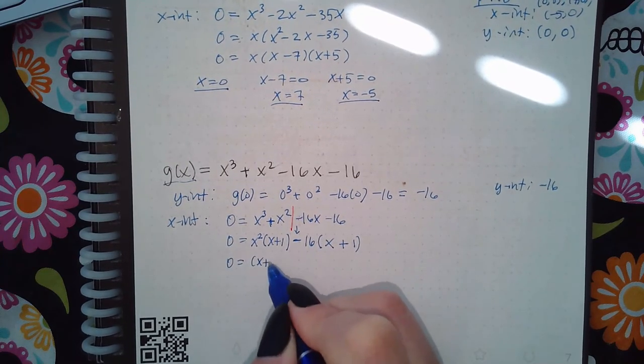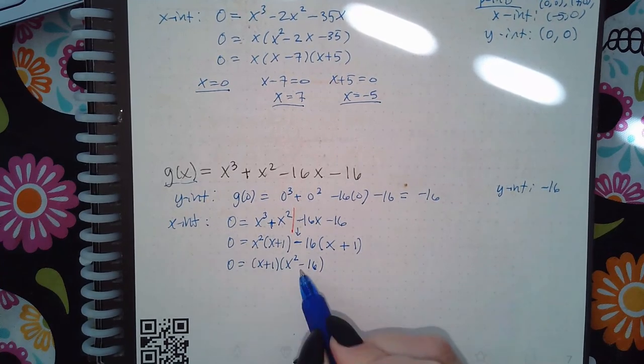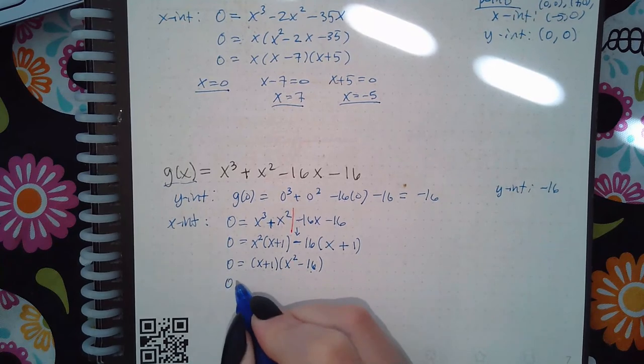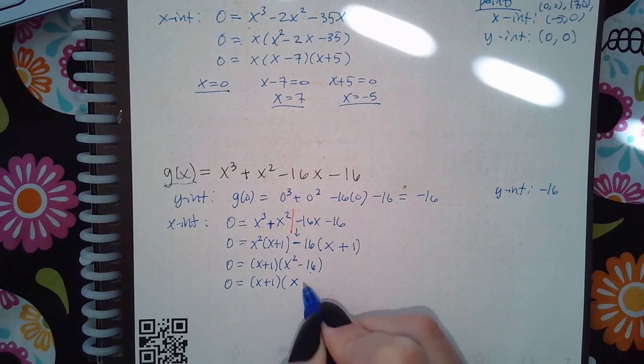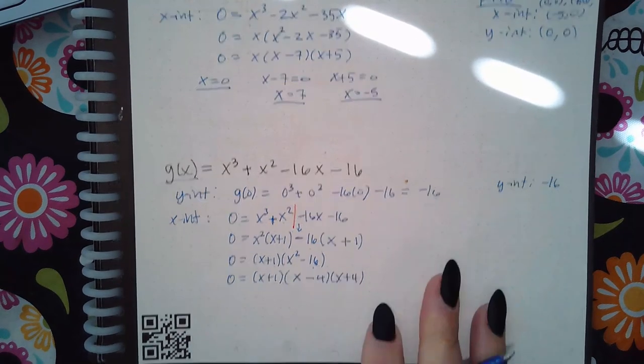Now that can be factored further because it is the difference of two perfect squares, so it can be written as x minus 4 and x plus 4. If I set each one of these equal to 0, I will get negative 1, positive 4, and negative 4.